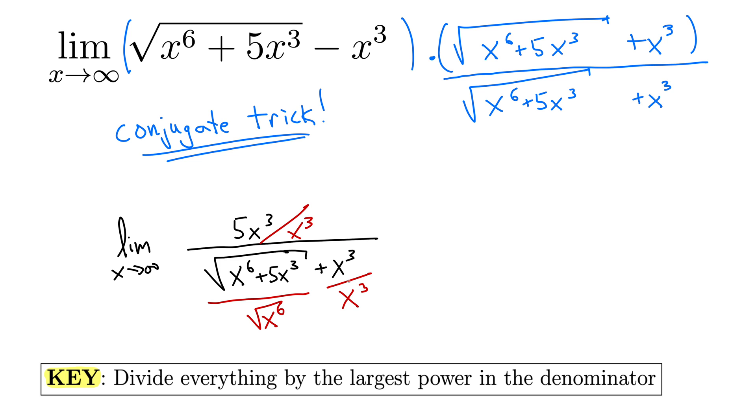We have two different versions then, as you can see, of x cubed, x cubed, and square root of x to the 6th. But they are the same at the end of the day.